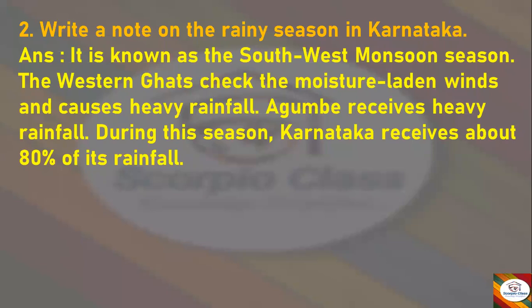Next question: Write a note on the Rainy Season in Karnataka. Answer: It is known as the Southwest Monsoon season. The Western Ghats check the moisture-laden winds and cause heavy rainfall. Agumbe receives heavy rainfall during this season. Karnataka receives about 80 percent of its rainfall during this season.